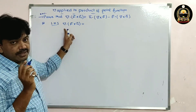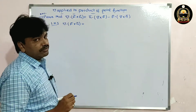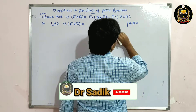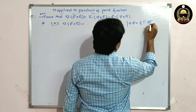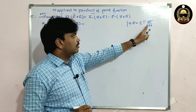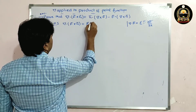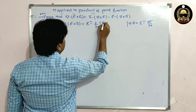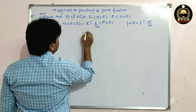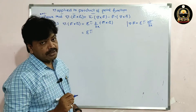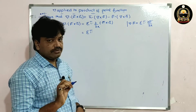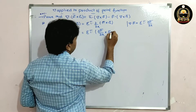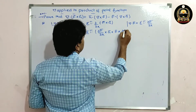Now, del dot means we use the divergence formula. The divergence formula is: del dot f-bar equals sigma i-bar dot dou f-bar by dou x. So applying this, we get sigma i-bar dot dou by dou x of f-bar cross g-bar. Now applying properties of derivatives, we get dou f-bar by dou x cross g-bar plus f-bar cross dou g-bar by dou x.